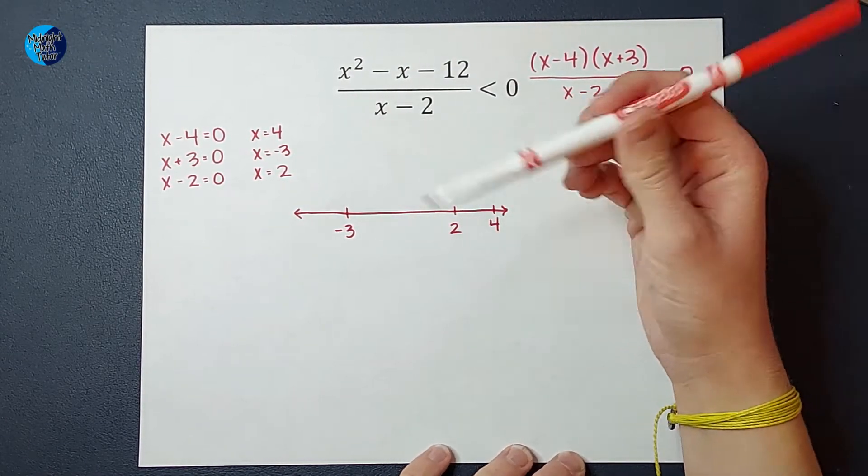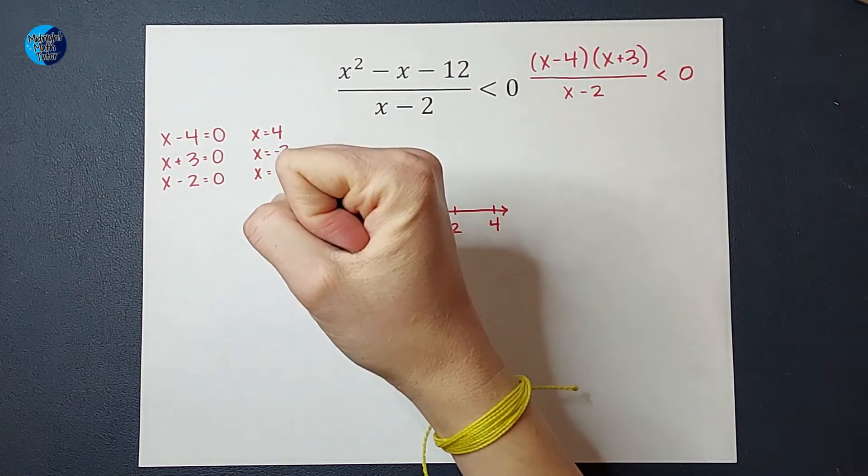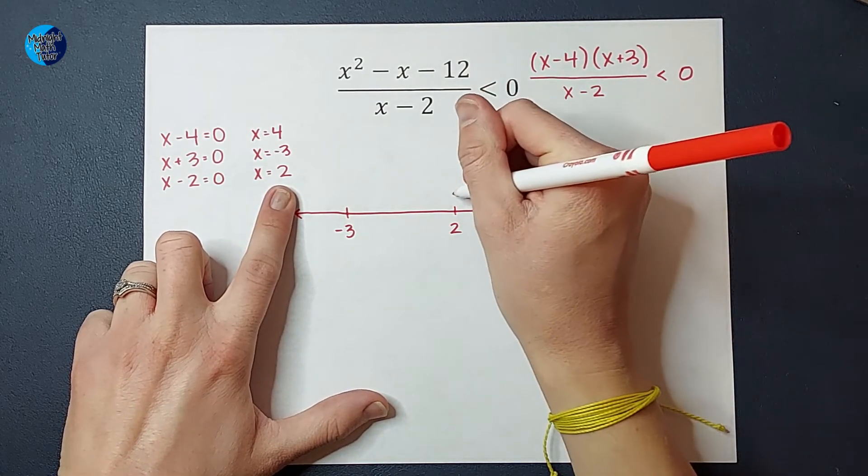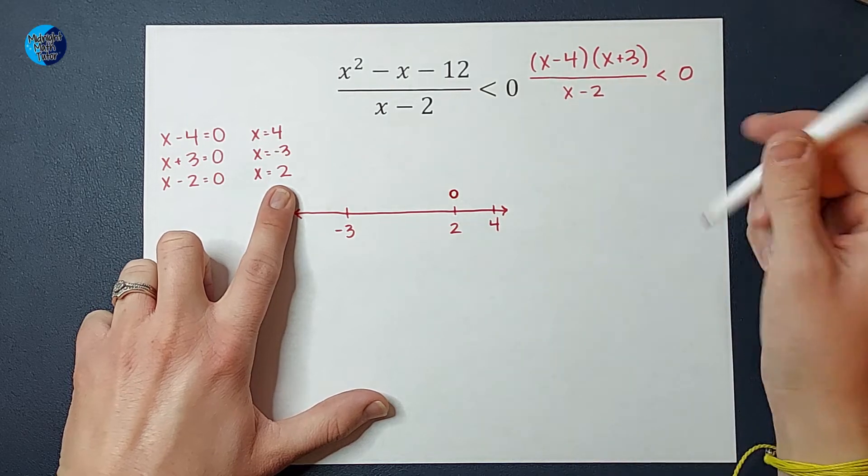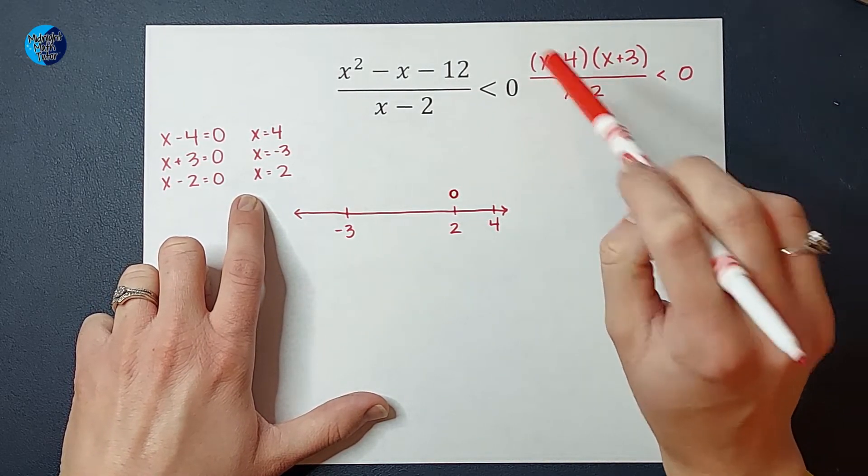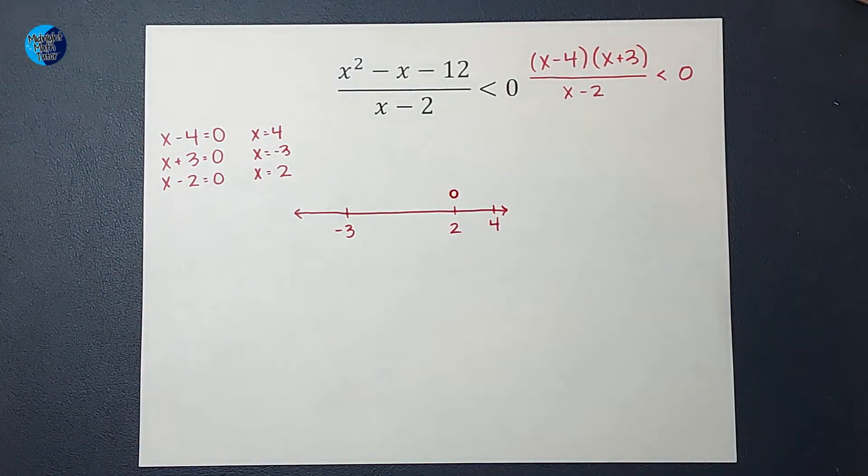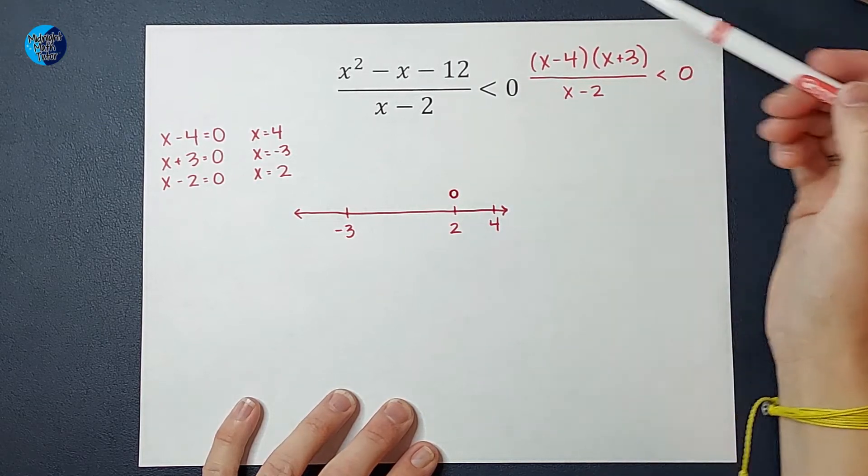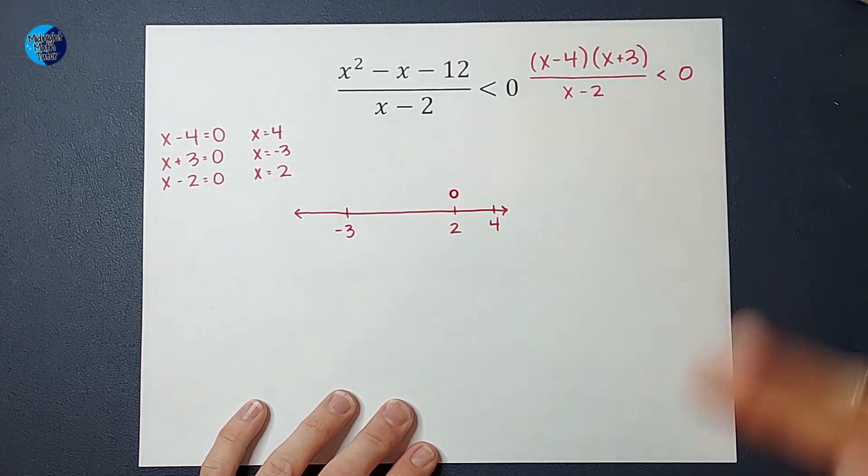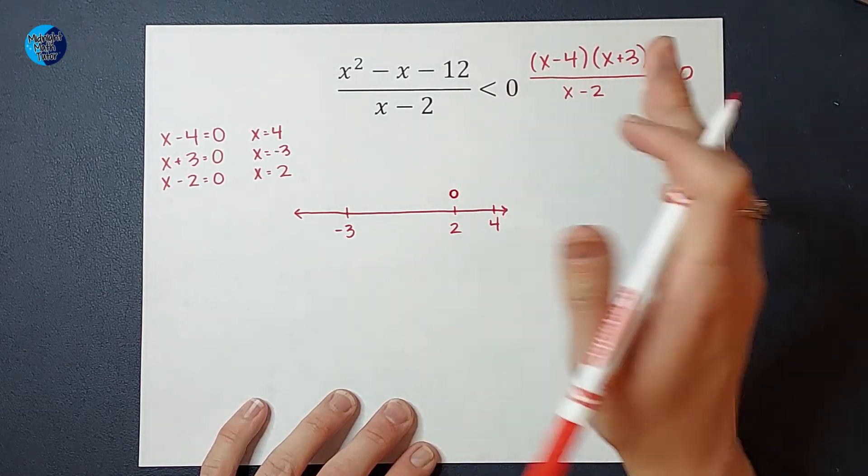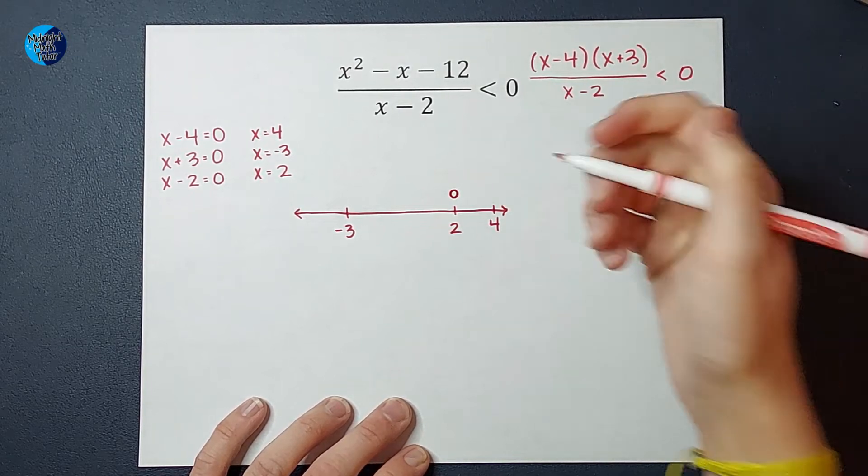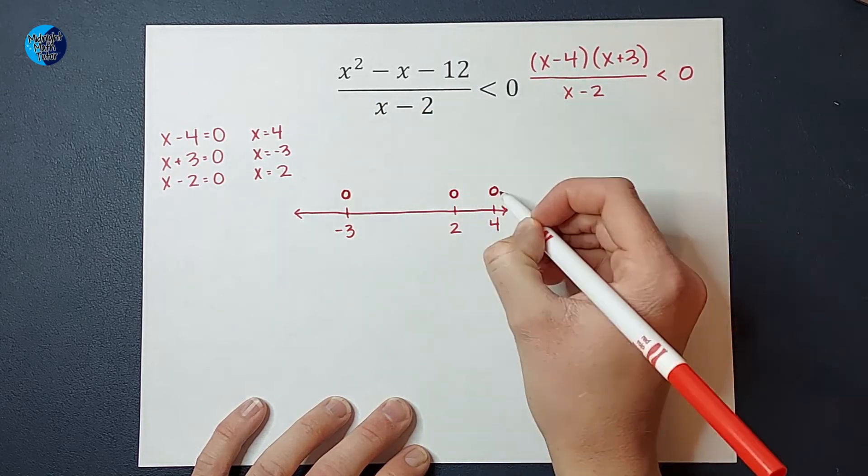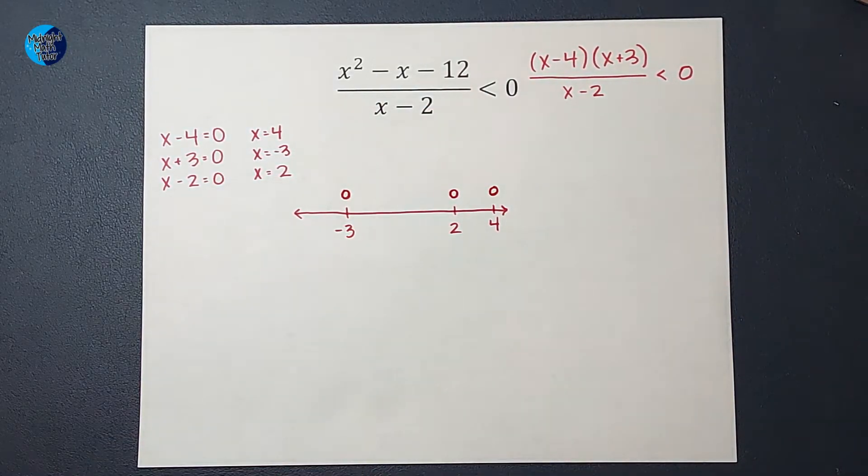I want to represent each of these points with a dot or a circle, and I need to know if it's an open circle or a closed circle. I know that 2 is going to be an open circle because if I were to plug in 2 for x, it would make my denominator zero, which is not okay in math. To know if 4 and -3 are open or closed, I look at this sign. Because it's less than and not less than or equal to, these are also going to be open circles.